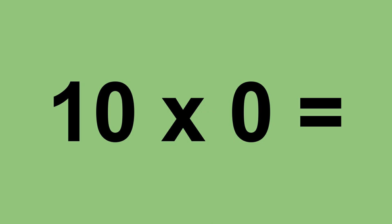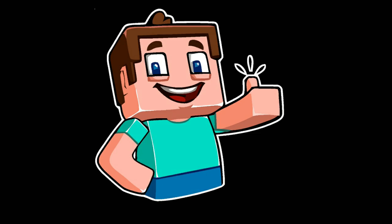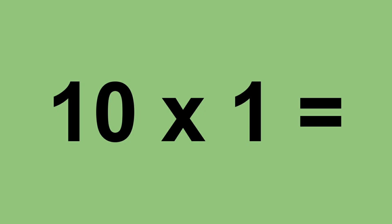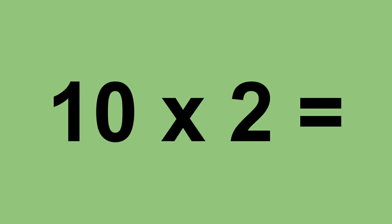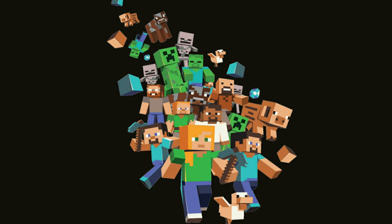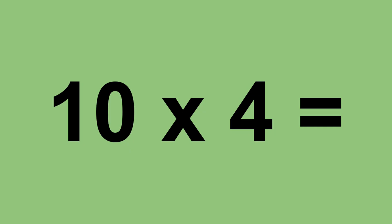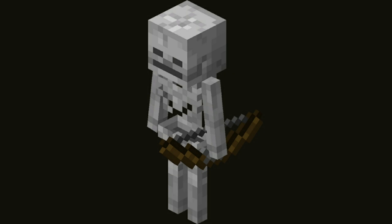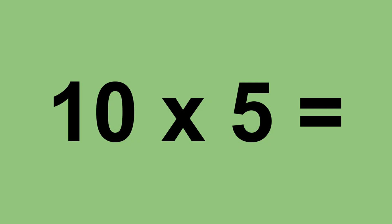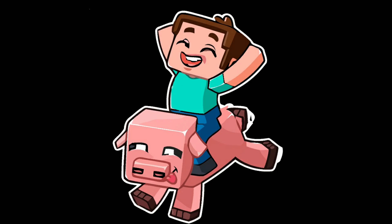10 times 0 equals 0. 10 times 1 equals 10. 10 times 2 equals 20. 10 times 3 equals 30. 10 times 4 equals 40. 10 times 5 equals 50. 10 times 6 equals 60.